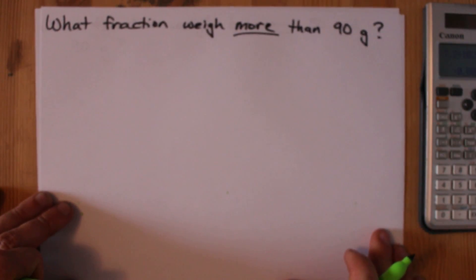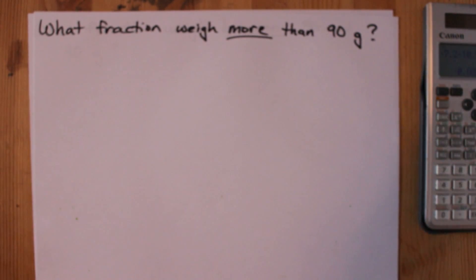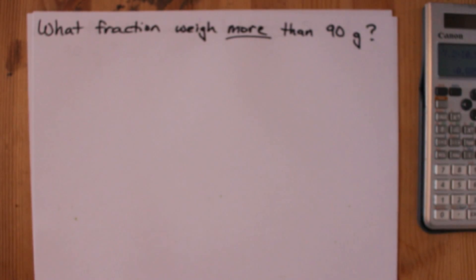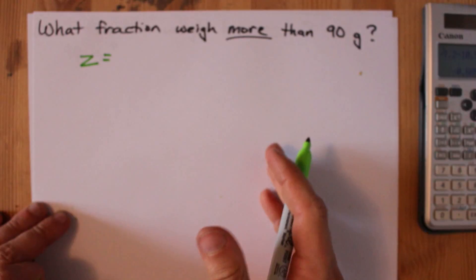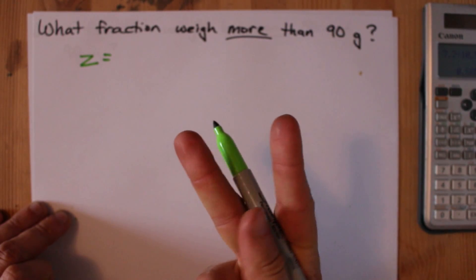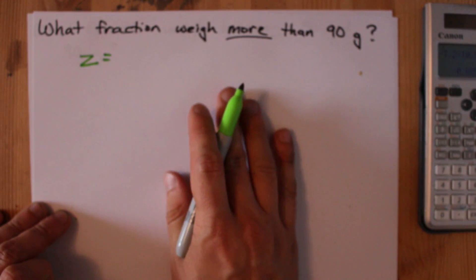But what if you're asked what fraction weigh more than a certain threshold? All you have to do is find the z-score for this, look it up in the table, and then subtract the answer you get from 1. But let's work on it together.